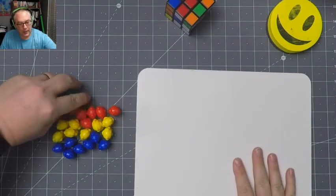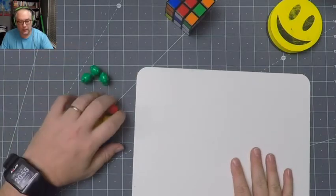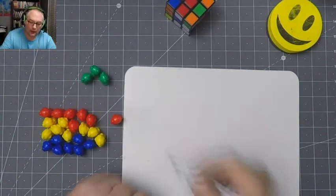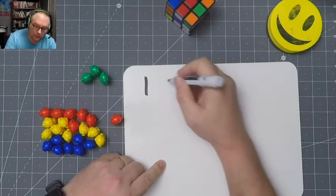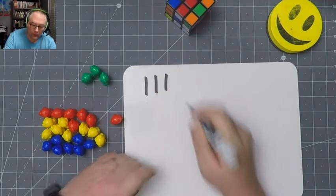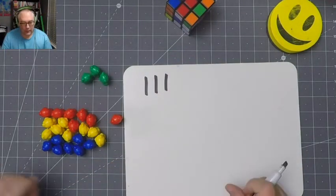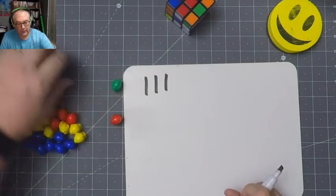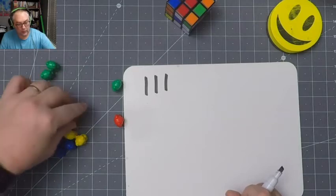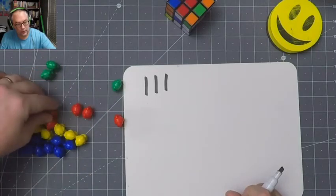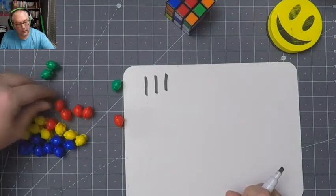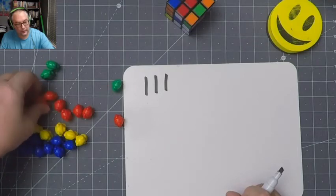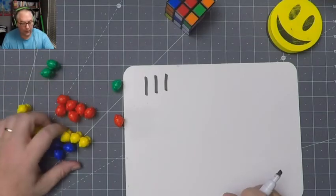We're going to use tally marks. Okay. Now, how many green bears do I have? I have one, two, three green bears. In case you've never seen tally marks before, tally marks work in a very special way. How many red bears do I have? I'll show you how they work. One, two, three, four, five, six, seven red bears.